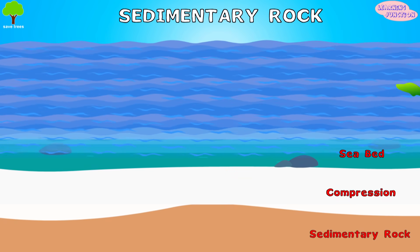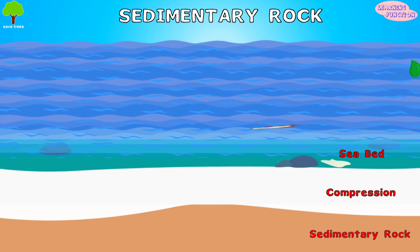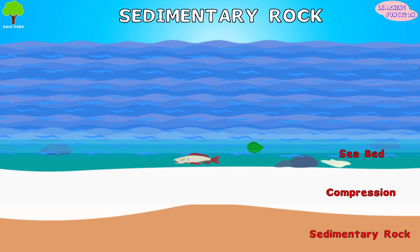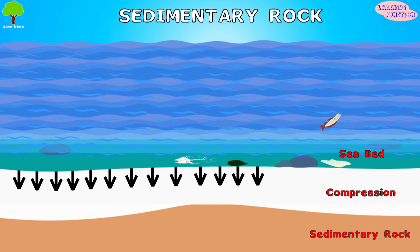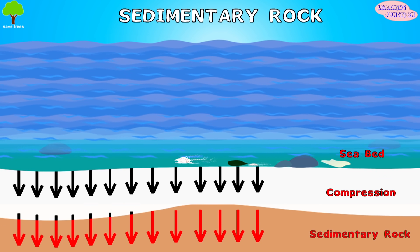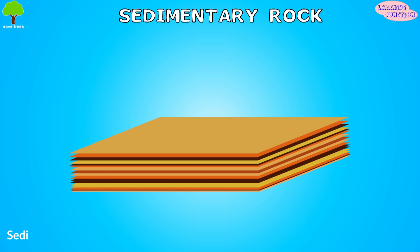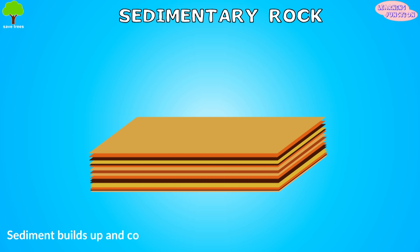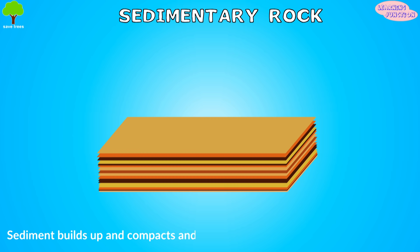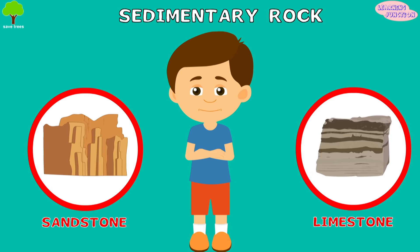Now the sedimentary rocks. They're formed when sediment compresses. Sediment is comprised of tiny rocks, plants, and dead animals. They reach the sea and stay in the seabed. Over millions of years, more and more sediment builds up and compacts. That compacted sediment eventually becomes sedimentary rock. Examples are sandstone and limestone.